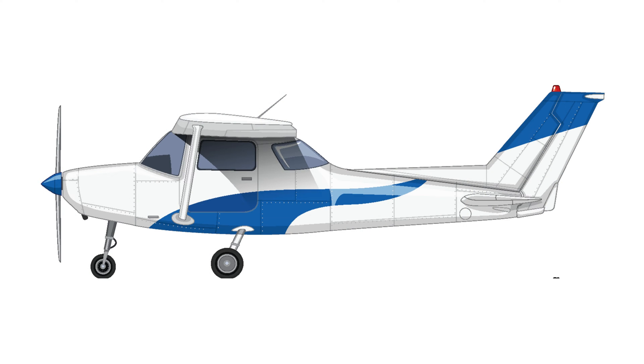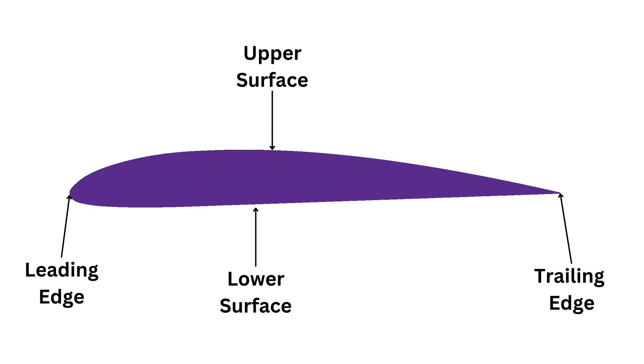An airfoil is the two-dimensional cross section of a wing. The geometry of an airfoil gives it its aerodynamic properties. An airfoil's geometry consists of its leading edge, the trailing edge, upper and lower surfaces.